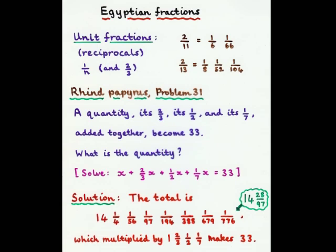The ability to calculate with these unit fractions can be seen from problem 31 of the Rhind papyrus. A quantity, its 2 thirds, its a half, and its seventh added together, give you 33. What is the quantity? If we were doing it using modern algebraic notation, which of course they didn't use, we'd say x plus 2 thirds x plus a half x plus a seventh x is 33. And we would solve it to give 14 and 28 ninety-sevenths. But if you look in the Rhind papyrus, this is their answer. And it shows an absolutely remarkable ability to calculate with these unit fractions.